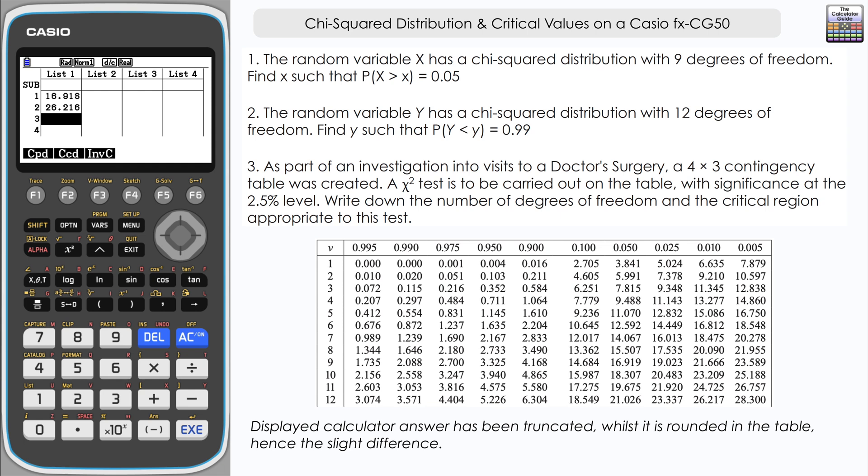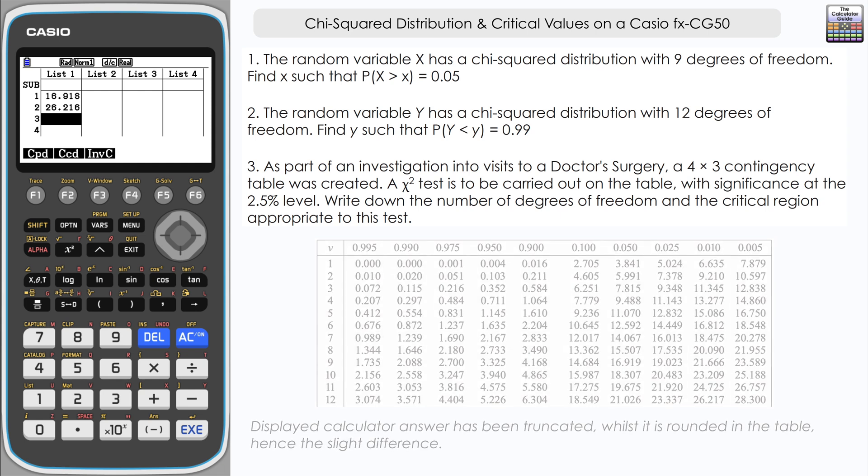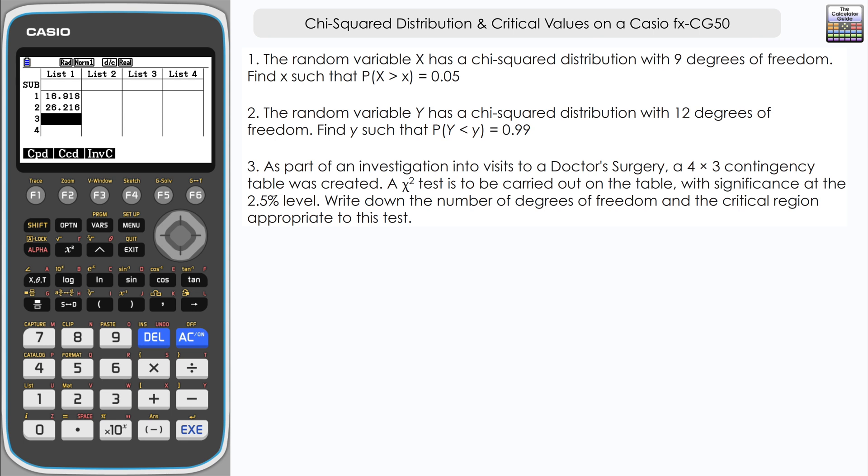Question 3 then. We've got a little bit more detail. As part of an investigation into visits to a doctor's surgery, a 4 by 3 contingency table was created. A chi-squared test is to be carried out on the table with significance at the 2.5 percent level. We've got to write down the number of degrees of freedom and the critical region appropriate to this test.